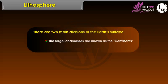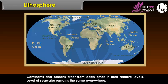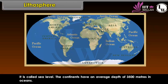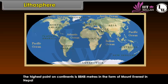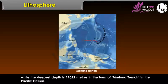The large land masses are known as the continents, and the ocean basins contain large water bodies. Continents and oceans differ in their relative levels. The level of sea water remains the same everywhere — it is called sea level. The continents have an average depth of 3,500 meters in oceans. The highest point on continents is 8,848 meters, in the form of Mount Everest in Nepal, while the deepest depth is 11,022 meters in the form of the Mariana Trench in the Pacific Ocean.